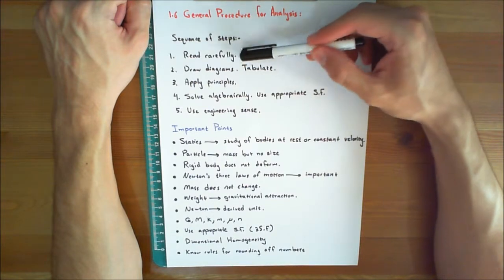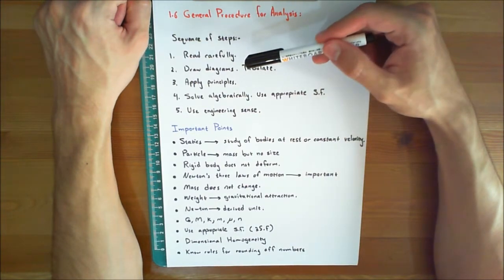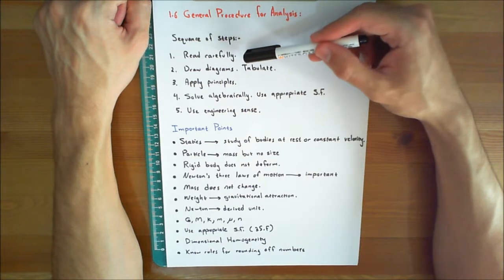Step 1: Read the problem carefully and try to correlate the actual physical situation with the theory studied. Step 2: Draw any necessary diagrams and tabulate the problem data.